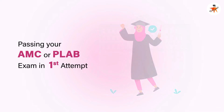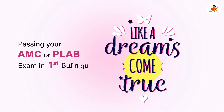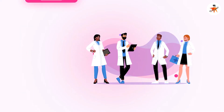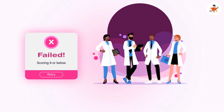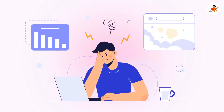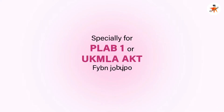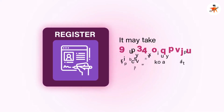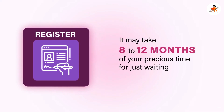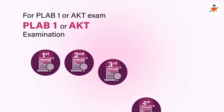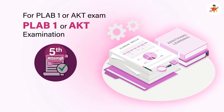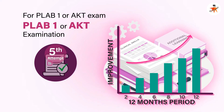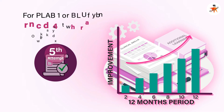Passing your AMC or PLAB exam in the first attempt is like a dream come true, especially for international medical graduates. If you fail, although you have multiple attempts allowed for each exam, even the thought of going for a second attempt is itself stressful — especially for PLAB 1 or UK MLA AKT exam, where registering for the exam is itself a cumbersome task and may take eight to twelve months of your precious time just waiting. For PLAB 1 or AKT exam, you have a maximum of four attempts allowed, and after four failed attempts you may apply for a fifth attempt, provided you demonstrate evidence of additional learning to improve your medical knowledge and clinical skills over a twelve-month period.